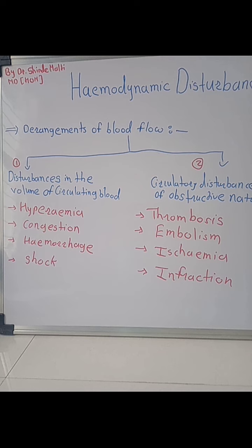Hyperemia and congestion are terms used for the increased volume of blood within the dilated vessels of an organ or tissue. Hemorrhage means the escape of blood from blood vessels — it may be internal or external. Shock is a clinical state of cardiovascular collapse characterized by acute reduction of effective circulating blood volume and inadequate perfusion of cells and tissues.